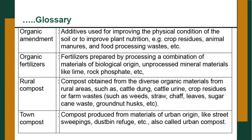Rural compost is obtained from diverse organic materials from rural areas such as cattle dung, cattle urine, crop residues, farm waste such as weeds, straw, chaff, leaves, sugarcane waste, and groundnut husk. Town compost, as the name suggests, is produced from material of urban origin like street sweepings and dustbin refuse, also called urban compost.